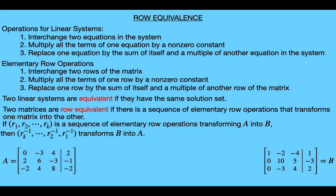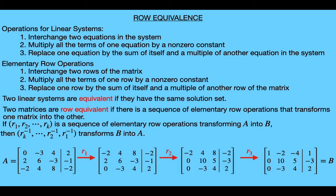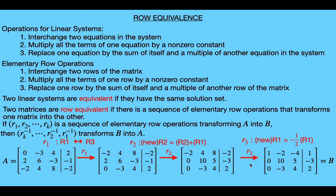For example, these two matrices A and B are row equivalent since we have this sequence of row operations that transforms matrix A into matrix B. The first row operation r sub 1 interchanges the first and third rows of matrix A. Then the second row operation r sub 2 replaces the second row with the sum of itself and row 1, adding terms for each column to give us a new row 2. And then we apply the last operation r sub 3, which multiplies every term of the first row by negative one half, giving us the resulting matrix equal to B.